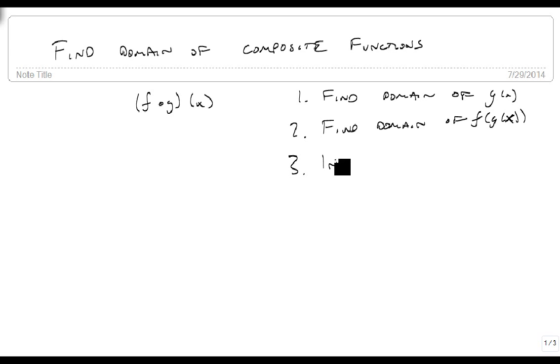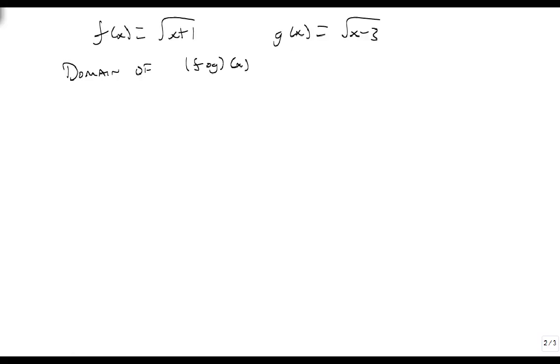Once we've done that, we're going to take the intersection of those two domains. So let's look at an example. Suppose that f of x is the square root of x plus 1, and g of x is the square root of x minus 3.